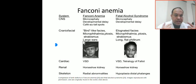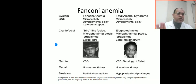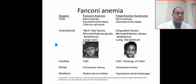Fanconi anemia is associated with thrombocytopenia, microcephaly, developmental delay, hypopigmentation, craniofacial abnormalities, microphthalmia, strabismus. Cardiac findings include VSD, renal findings include horseshoe kidneys, and skeletal findings include radial and thumb abnormalities. In our case, the radius and thumb are present, so Fanconi anemia is ruled out. Note: Fanconi syndrome is different — it involves renal abnormalities, whereas Fanconi anemia involves CNS, craniofacial, cardiac, renal, and skeletal abnormalities.